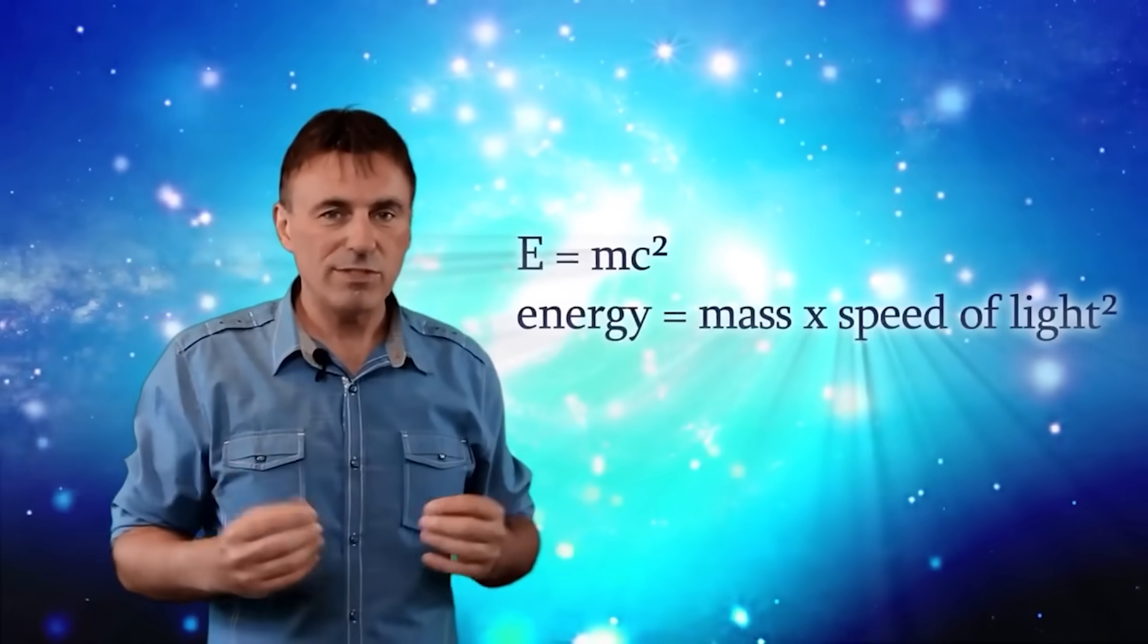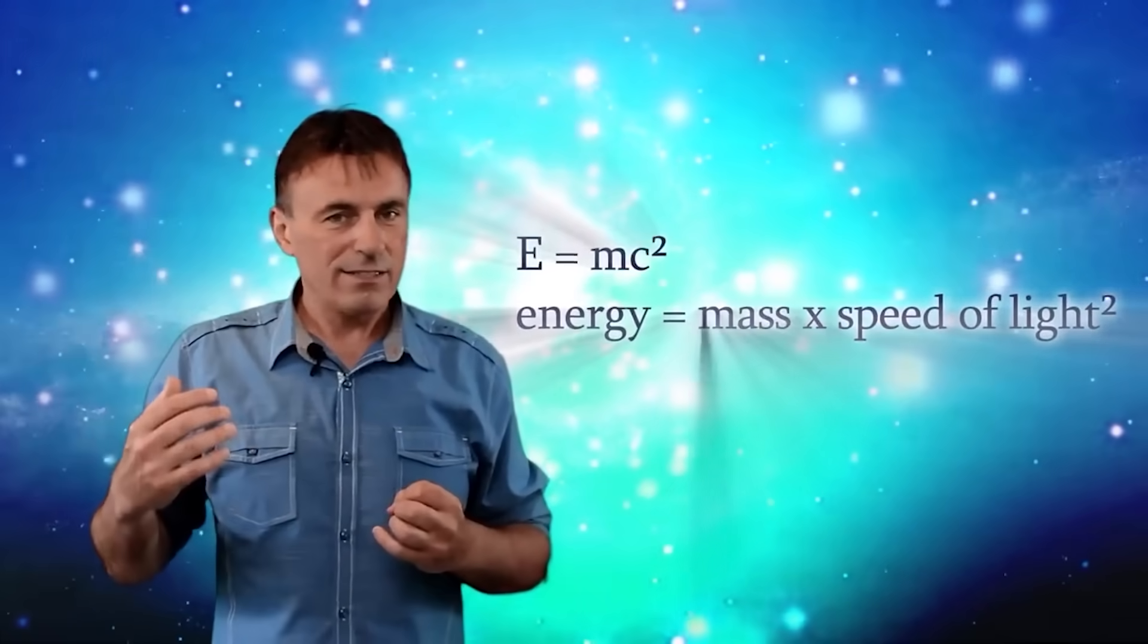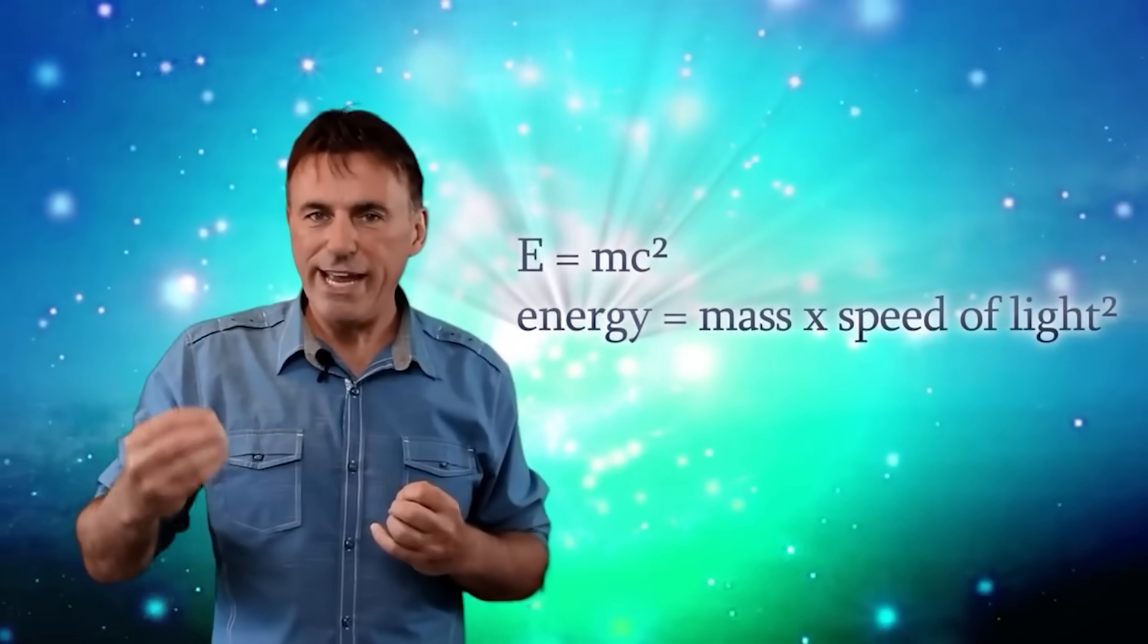Einstein's E equals mc squared. Energy equals mass times the speed of light squared. Energy can convert and make matter. Yes. Energy, not light specifically. Don't put too much weight on the name, speed of light. It's a poorly named constant. It's better to think of it as the speed of causality.